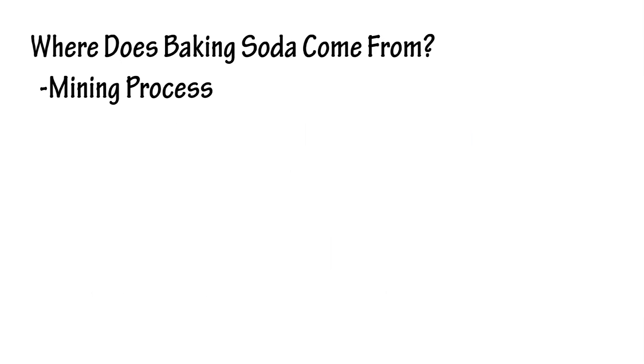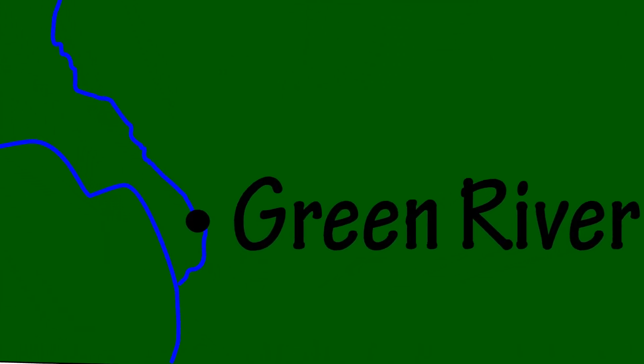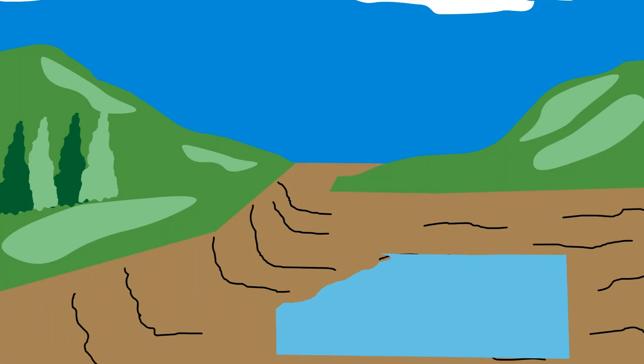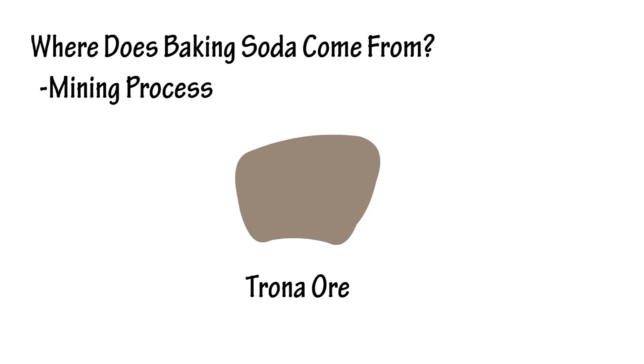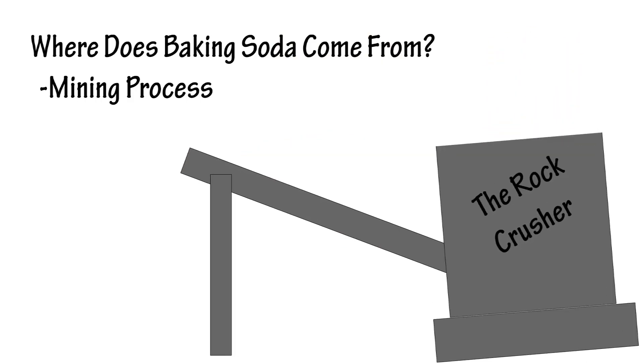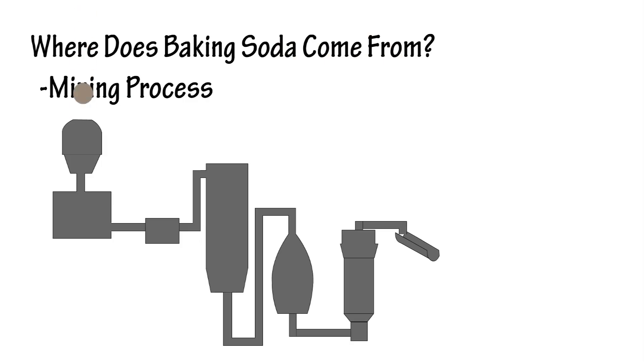For the mining process, we need to go back a long, long time ago to the land surrounding Green River, Wyoming. There was a large lake and over time this lake evaporated, leaving a 200 billion ton deposit of something called Trona deep underground. This Trona ore is mined and brought to the surface where it goes through a processing phase that produces the baking soda that we know.